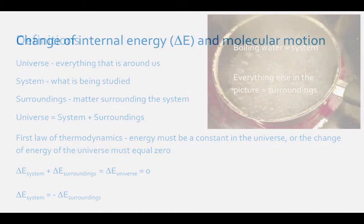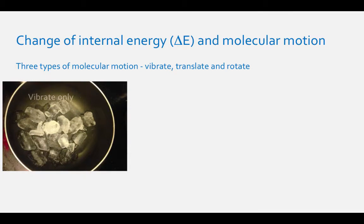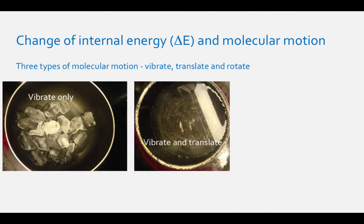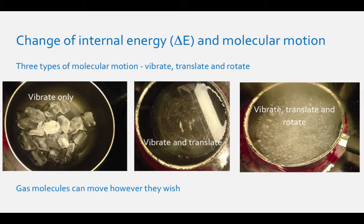This change of energy we are referring to is the change in internal energy. The change of internal energy of a chemical system will have three types of molecular motion. Starting with solid ice, the molecules can only vibrate in place. In liquid water, the molecules can still vibrate, but now they can also translate in space — they can flow past each other. In the gas phase, molecules can vibrate, translate, and rotate around in space, because gas molecules have no other entities holding them in place.